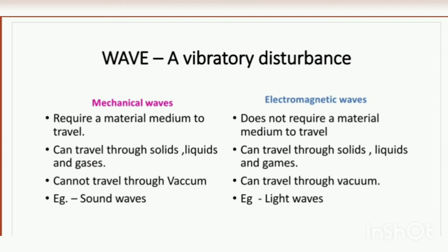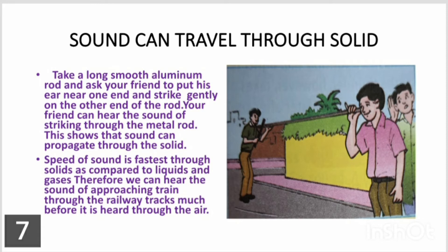Sound waves are not electromagnetic waves — they are mechanical waves. To show how sound waves propagate through solids, we can do a simple activity: take a long metallic rod — aluminium, iron, or copper. Ask your friend to put his ear on one end of the rod. From the other end, tap or scratch the rod gently so your friend cannot hear it through the air, but he will be able to hear the sound through the metal rod. This shows that sound waves can propagate through solids.